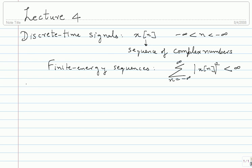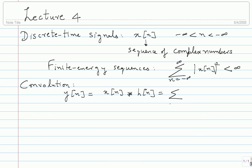The first thing I am going to point out is discrete time convolution. It has a very similar notation to the continuous time case. I will use a slight abuse of notation and call y of n the convolution of x of n and h of n — that is the sum over all m of x(m) h(n minus m). You can also write it as h(m) x(n minus m). That is discrete time convolution.